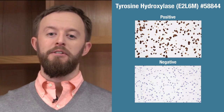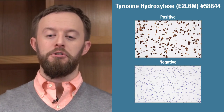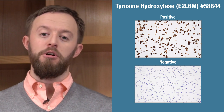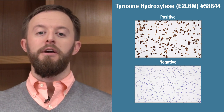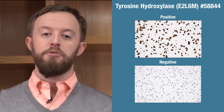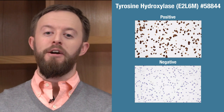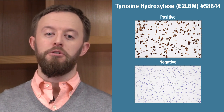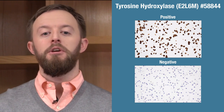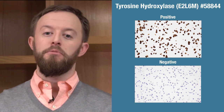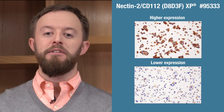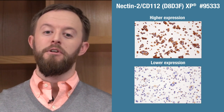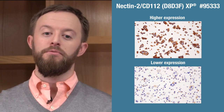Ideally, you'd have one cell line that endogenously expresses the target protein as the positive, and another that lacks expression as a negative, to provide a representative picture of target expression levels. If these are not available, cell lines that express the protein at higher versus lower levels can often be informative.